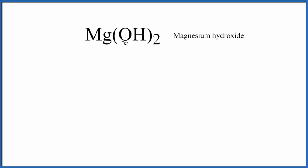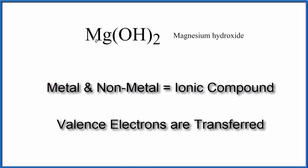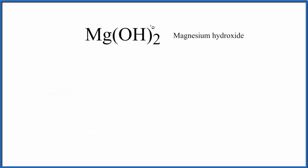Magnesium is a metal, and then oxygen and hydrogen, those are non-metals, and they actually form a polyatomic ion. It's called hydroxide. In an ionic compound, the metal will transfer electrons to the polyatomic ion, the non-metals here.